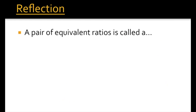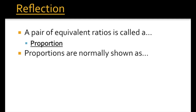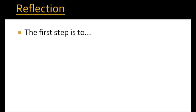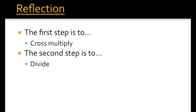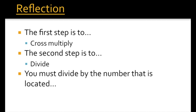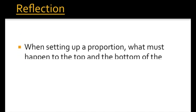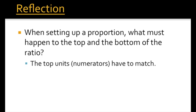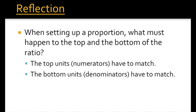Reflection: A pair of equivalent ratios is called a proportion. Proportions are normally shown as fractions. There are two steps used when solving proportions. The first step is to cross-multiply. The second step is to divide — you must divide by the number directly in front of the variable. When setting up a proportion, the top units (numerators) must match, and the bottom units (denominators) must also match.